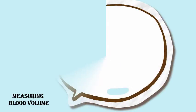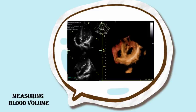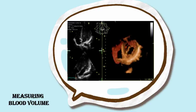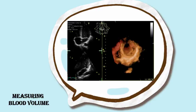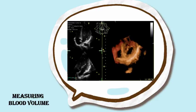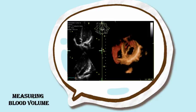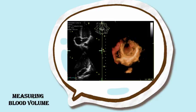4D ultrasound could also be applied in measuring blood volume and thus performing heart examination. It can make a significant contribution to our understanding of the developing fetal heart in both normal and abnormal cases. Following acquisition, the ultrasound system applies mathematical methods to process the volume data and detect systolic peaks, which are used to calculate the fetal heart rate.